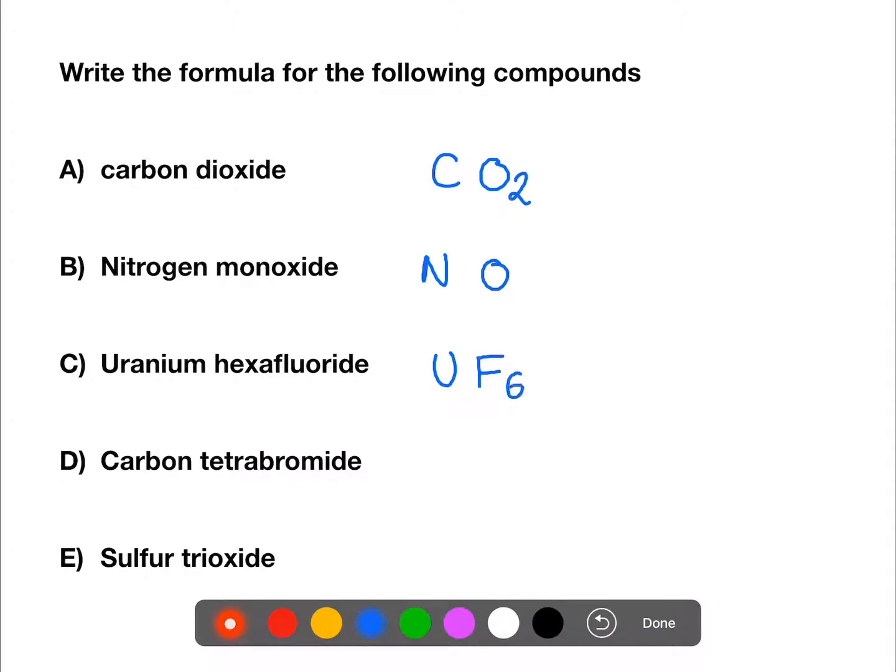For carbon tetrabromide, we have C for carbon and Br for bromide. We have no prefix on the carbon but we do on the bromide, and it's four for tetra.